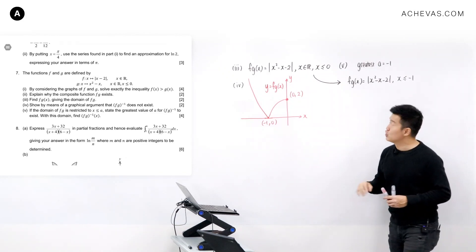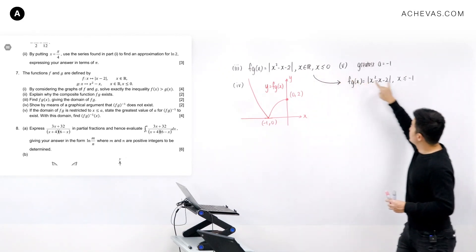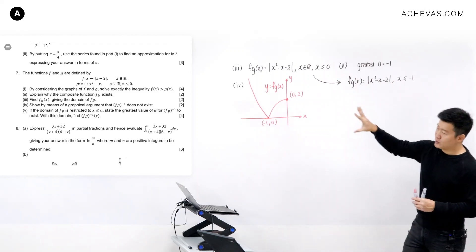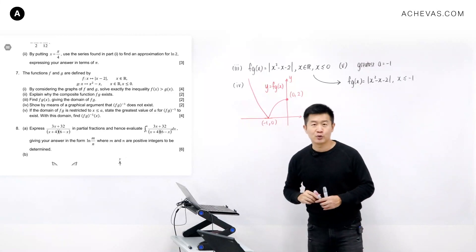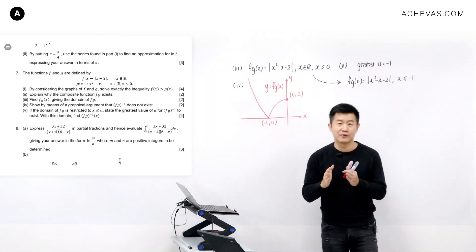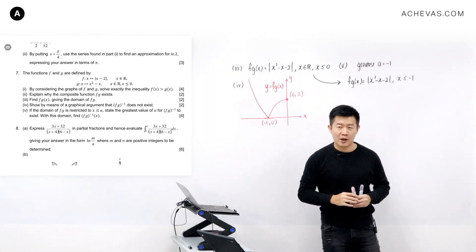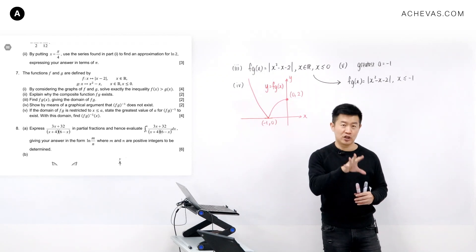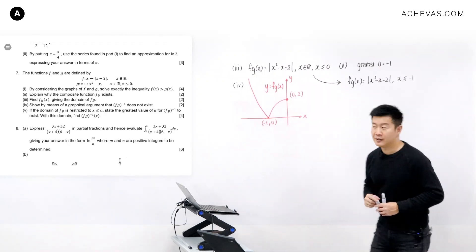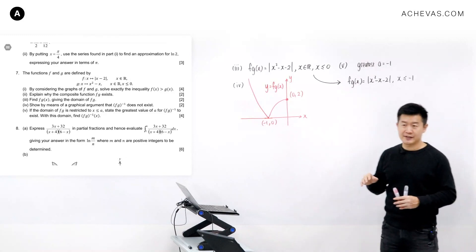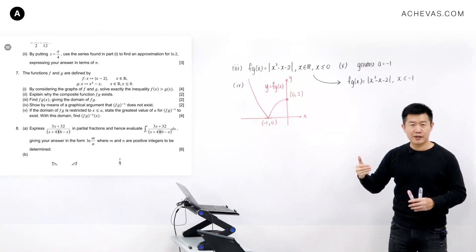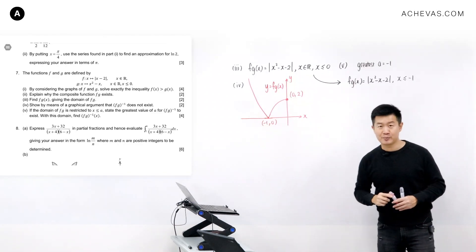To work on the inverse of the function fg, we have redefined its domain to be less than or equal to minus 1. According to what this question is asking in part 5, we are supposed to come up with the expression for the inverse of fg. We are faced with a pretty unique situation — one that can actually appear in quite a few schools' J1 and J2 end of year exams. If we try to find the inverse using the usual process, we will run into a problem.